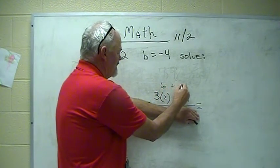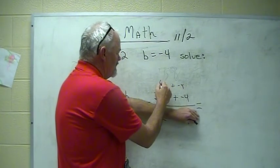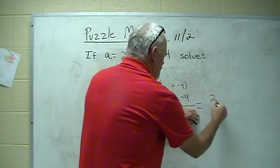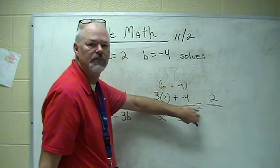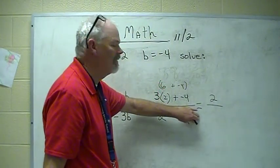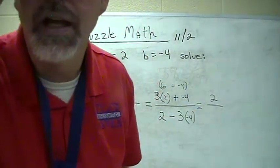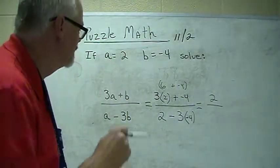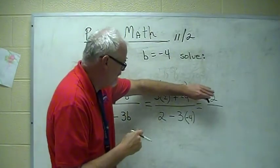And then we bring up plus the negative 4. 6 plus negative 4 turns into 2. So, we got a 2 on top. 2 on top. Make sure that's still on camera. Yeah. That's on camera. So, we're done with the top.